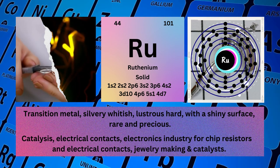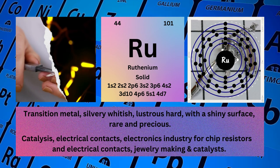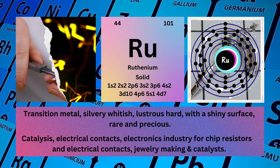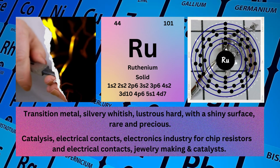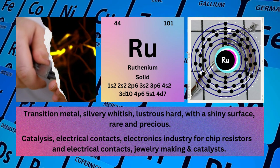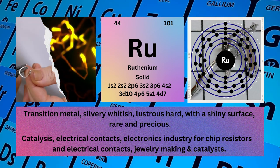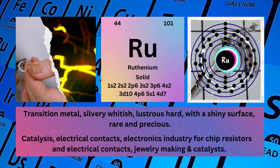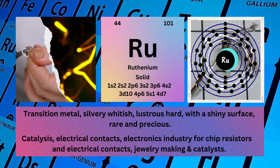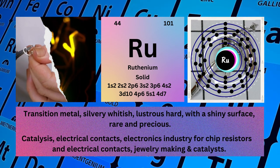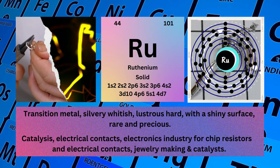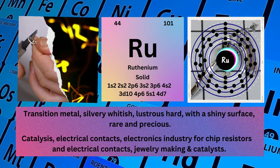Physical properties: transition metal, silvery white, lustrous, hard, with a shiny surface, rare and precious. Ruthenium is used for catalysis, electrical contacts, in the electronics industry for chip resistors and electrical contacts, jewelry making, and as a catalyst.